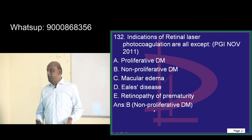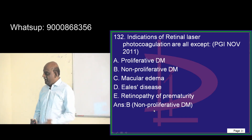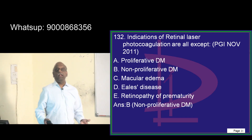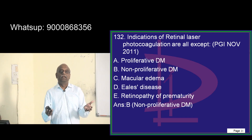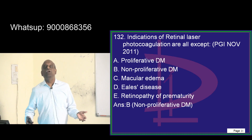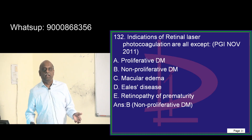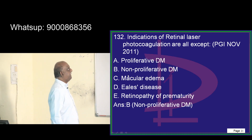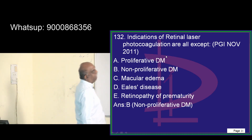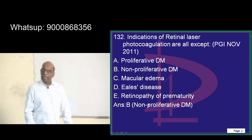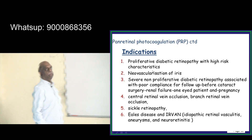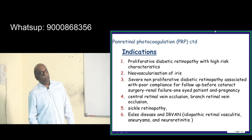Retinopathy of prematurity, where any hypoxia stimulates the retina to develop neovascularization — to kill all those new vessels from developing, you use retinal laser photocoagulation.